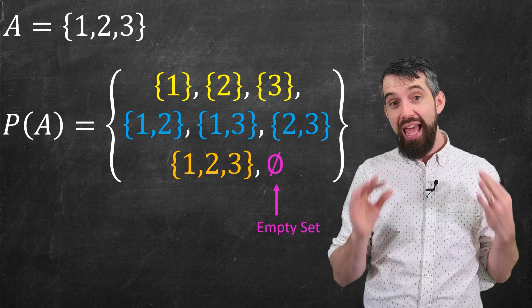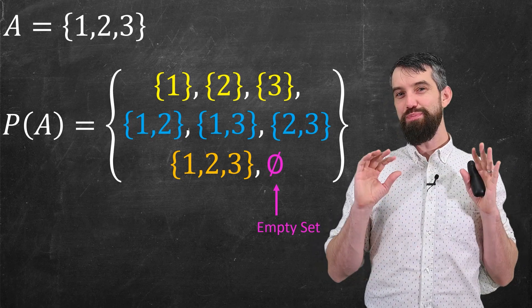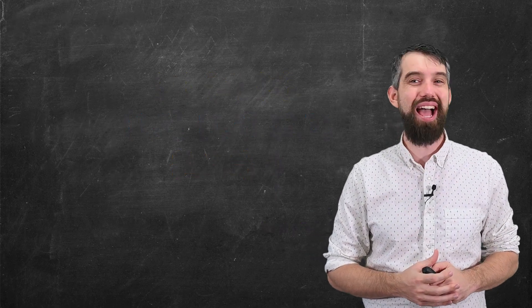Add all these up, and there are eight different elements in the power set of the set {1, 2, 3}. Let's play even a little bit further with this funky empty set thing, because it's kind of fun to think about.